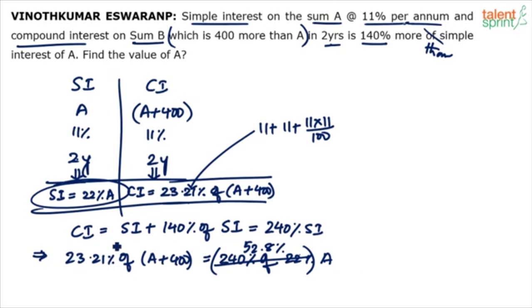Now do the calculation. 52.8 percentage minus 23.21 percentage is equal to 23.21 percentage of 400. You get me. So the last step is going to be as follows. I mean I am just writing the step directly. 52.8 minus 23.21 percent of A is equal to 23.21 percent of 400.